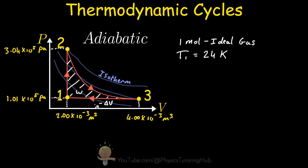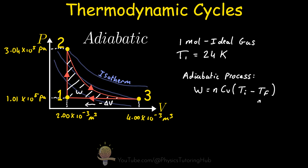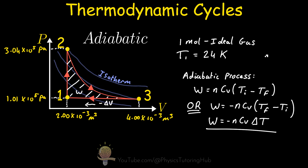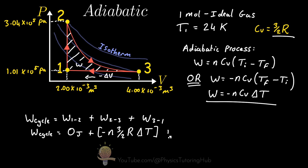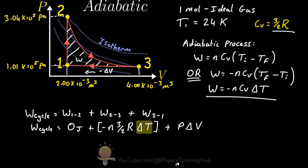The work done under an adiabatic curve is given by a specific equation — written so that an increase in temperature gives a positive sign. The total work done in a cycle is the sum of the work done by each process. An isovolumetric process doesn't do any work. We've got the work for the adiabatic process and for the isobaric process. But we face a slight hurdle: how do we find the temperature at state two and state three for our one mole of ideal gas?